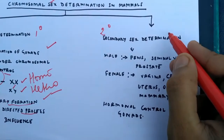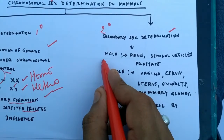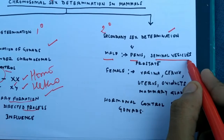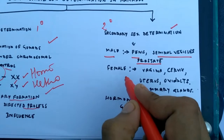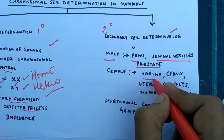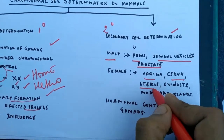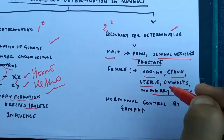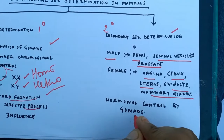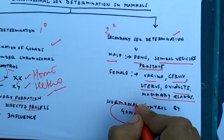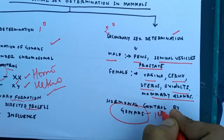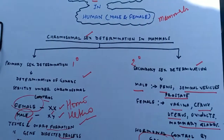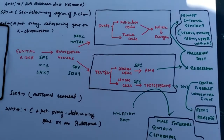Secondary sex determination refers to the development of secondary sex organs. In males these are the penis, seminal vesicle, and prostate. In females they include the vagina, cervical canal, uterus, oviduct, and mammary gland. These are under the effect of hormones created by the gonad, which are the primary sex organs.